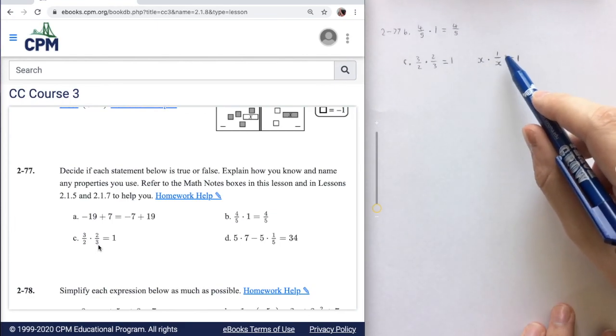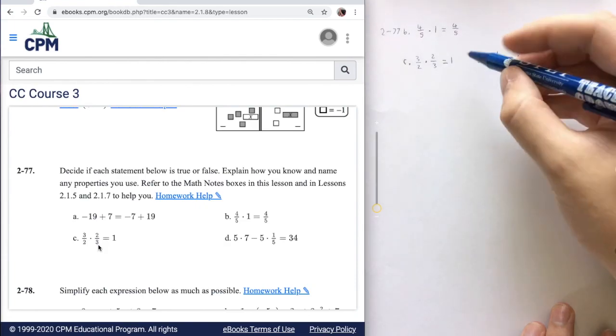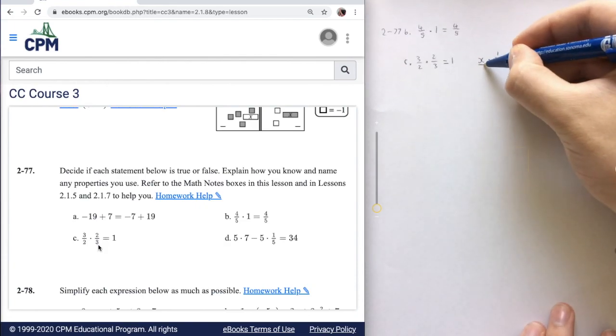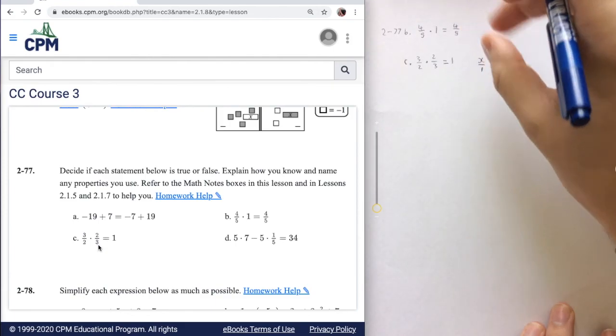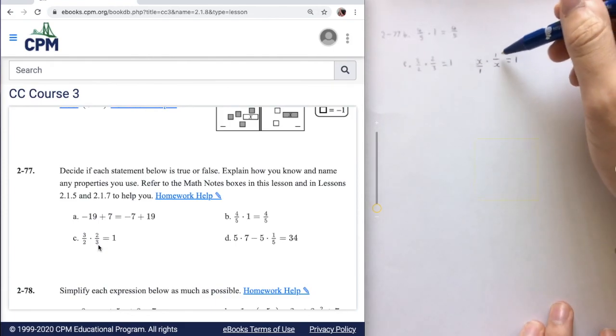You might be wondering why there's 1 on top, or you can just think of x as x over 1. So you're just flipping the x over 1 fraction to being 1 over x.